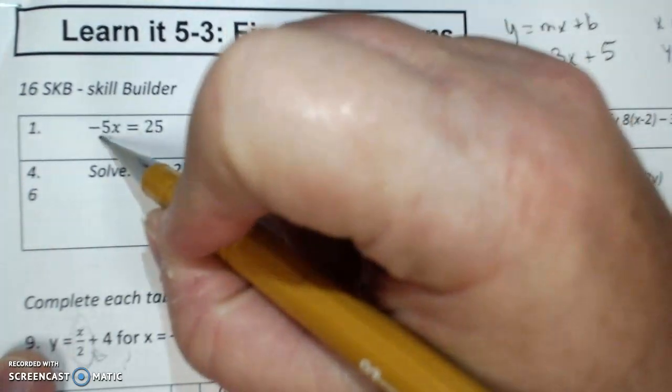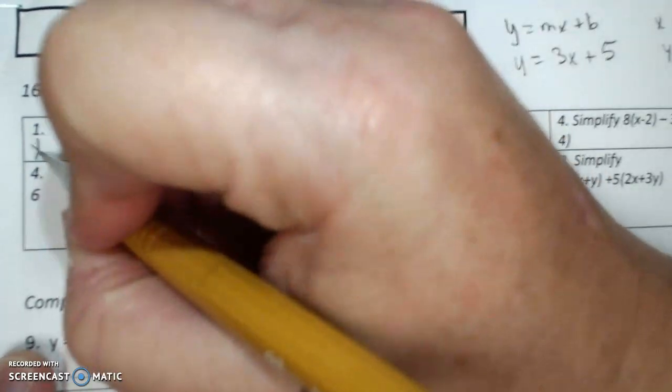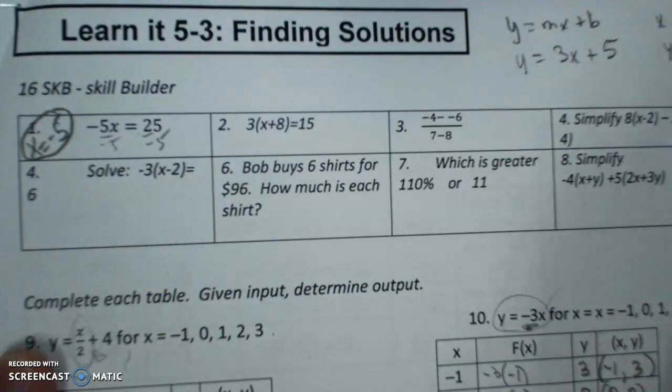Solve. Divide both sides by negative 5. X equals negative 5 because a positive times a negative gives you a positive.